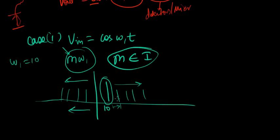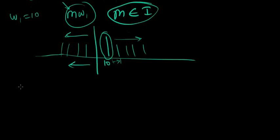And M represents the order of the harmonic. For example, 20 is the second-order harmonic, 30 is the third-order harmonic. So this is not a big deal anyways.